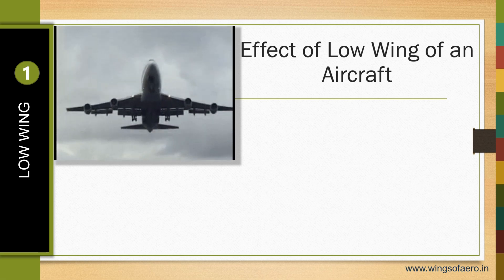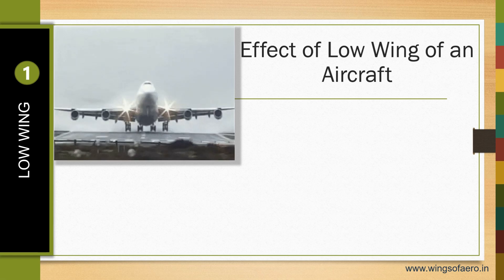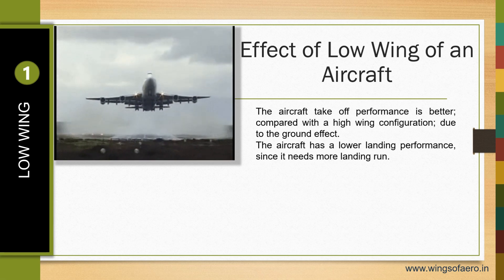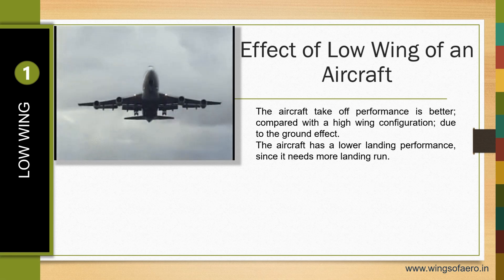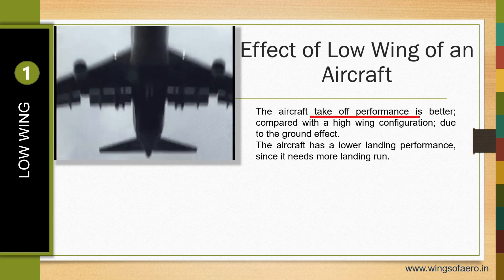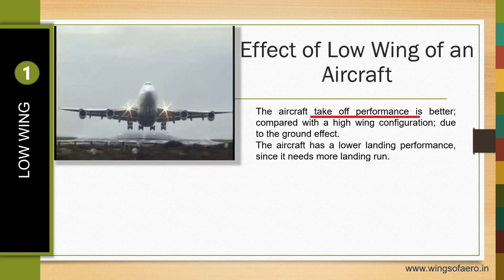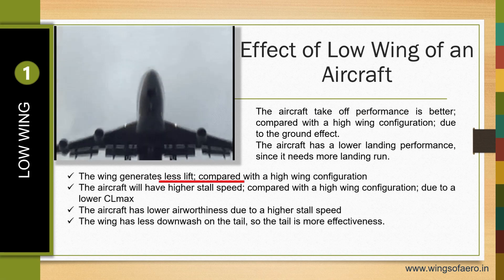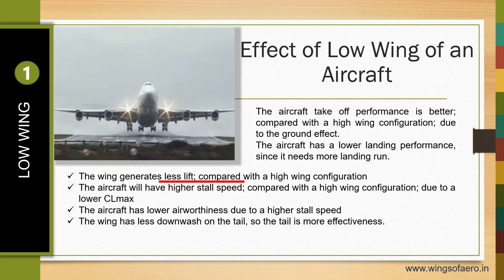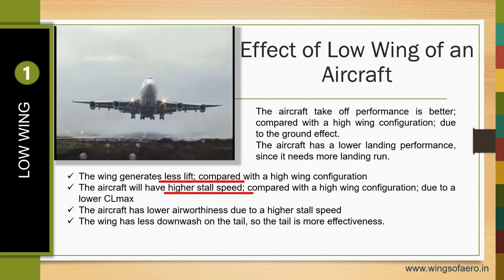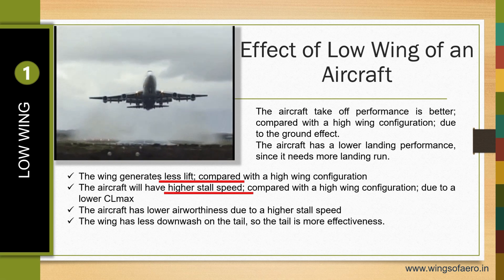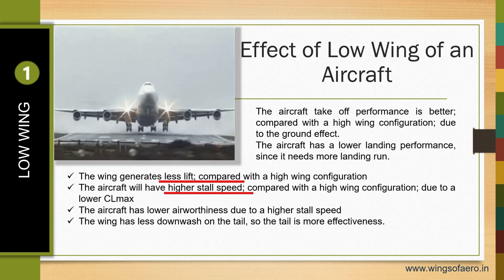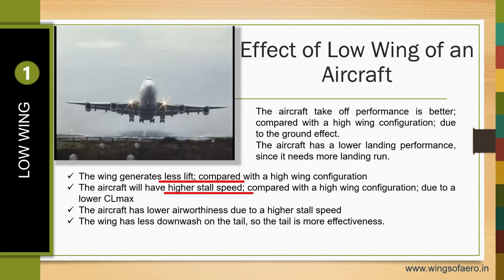The effect of low wing: the aircraft takeoff performance is better compared with a high wing configuration due to ground effect. However, the aircraft has lower landing performance. The wing generates less lift compared with a high wing configuration, and the aircraft will have a higher stalling speed due to a lower CL max — coefficient of lift.